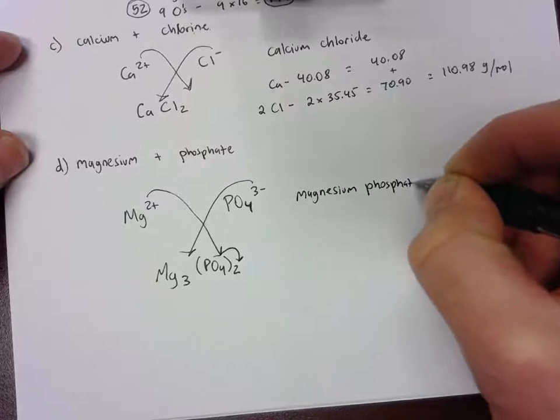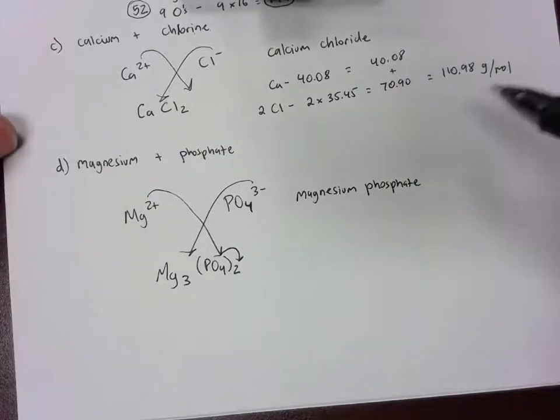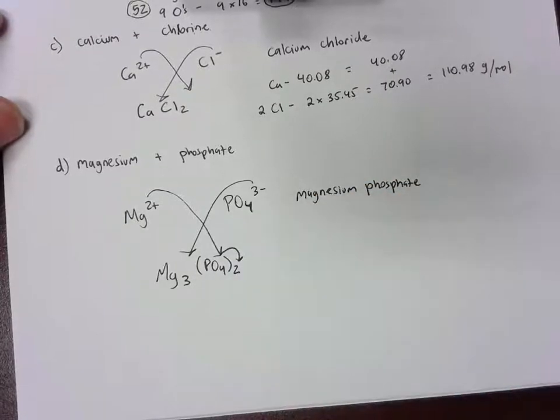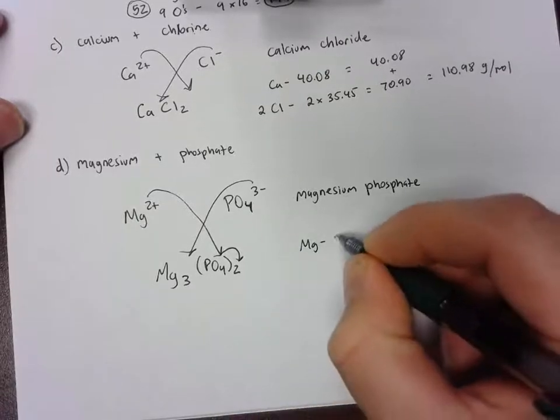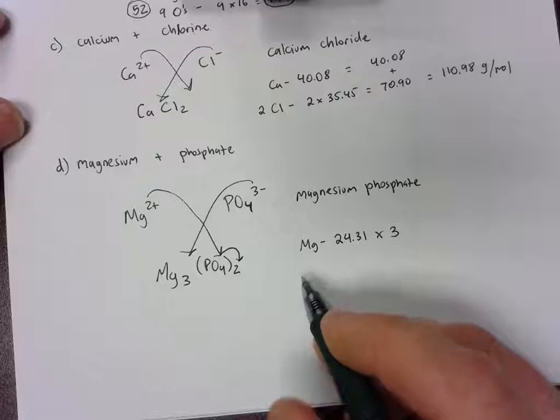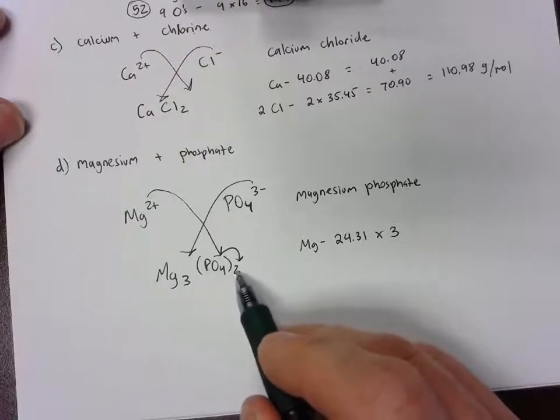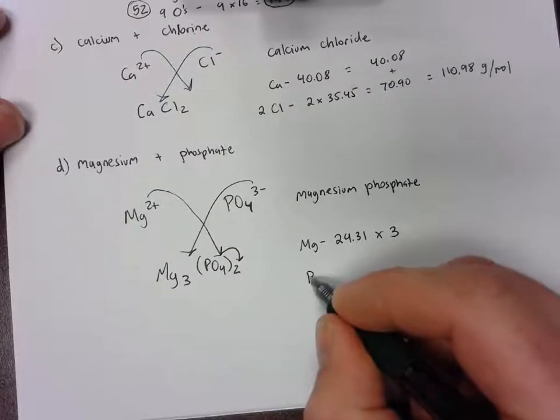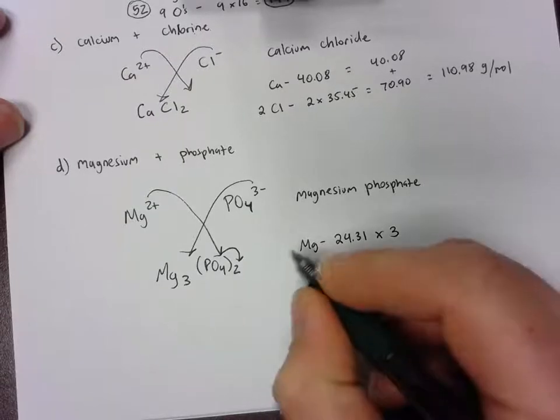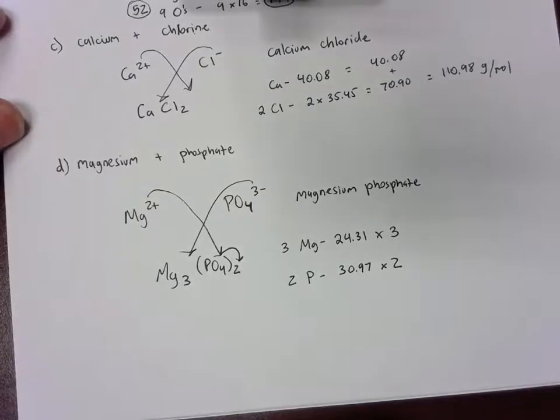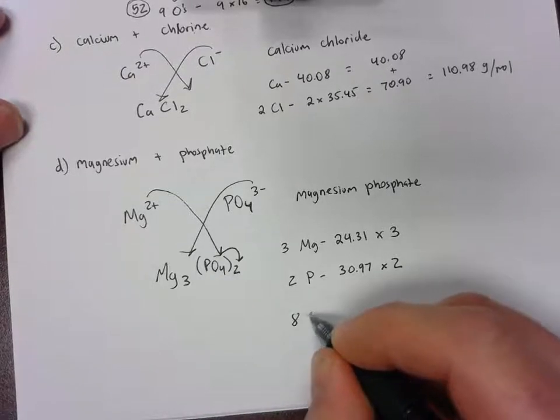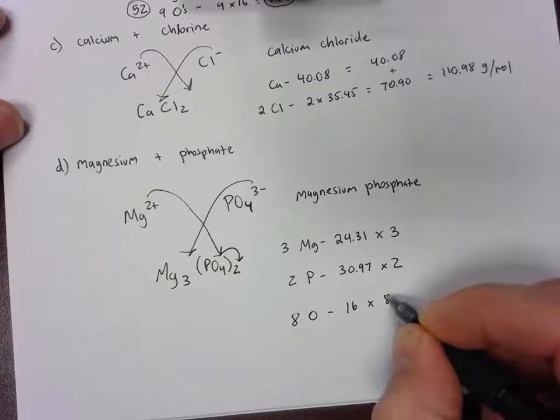Let's look at how many of each element we have. We have three magnesiums here because we have a subscript of 3 under the magnesium, and each magnesium comes in at 24.31, we have three of them. And then we have two phosphorous, so this two distributes to that P. P comes in at 30.97 when I look at the periodic table, and I'm going to multiply that times two. And then I take four times two which is eight, that's the oxygens. Each oxygen is 16 and multiply it by eight.